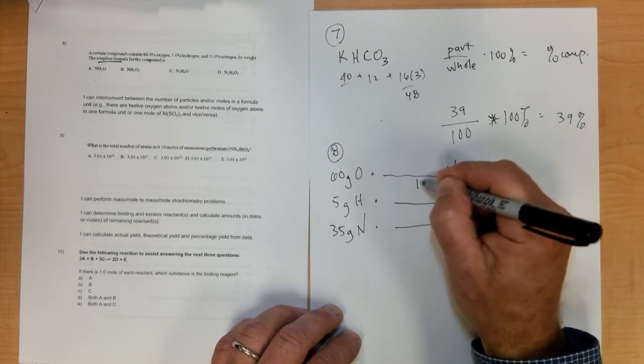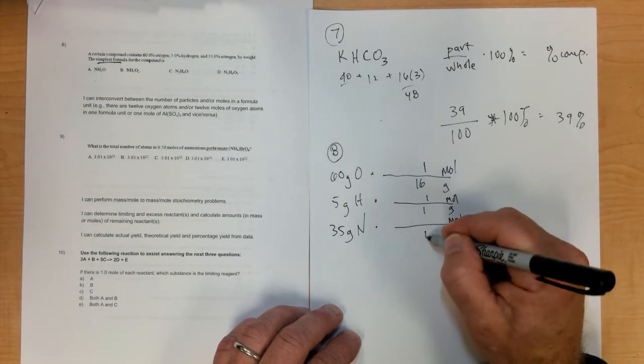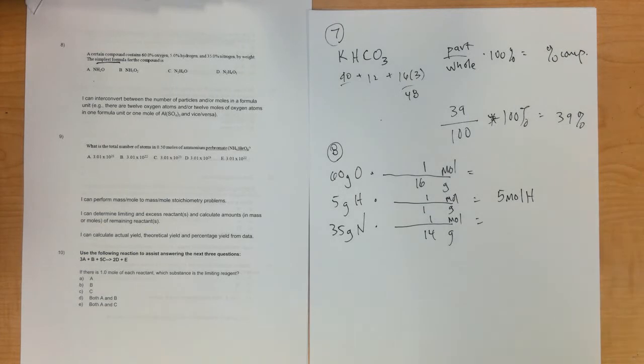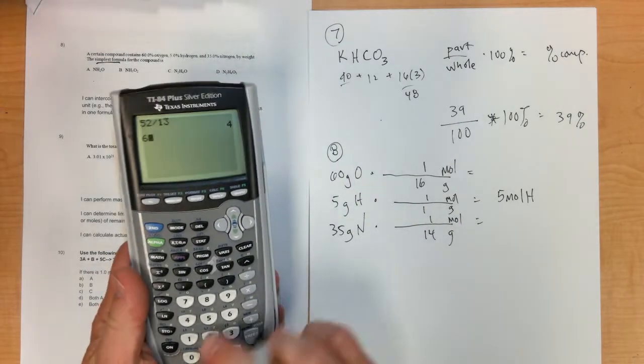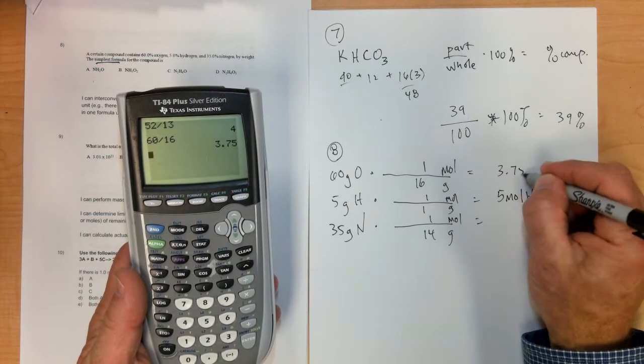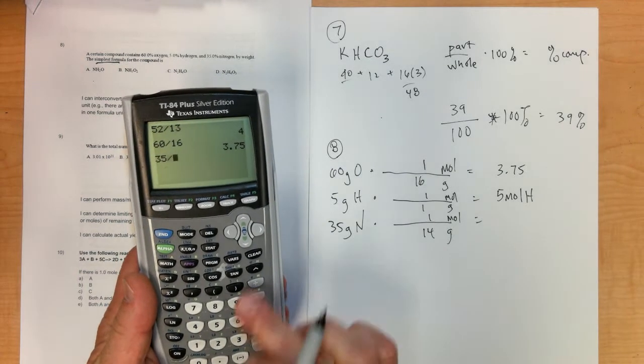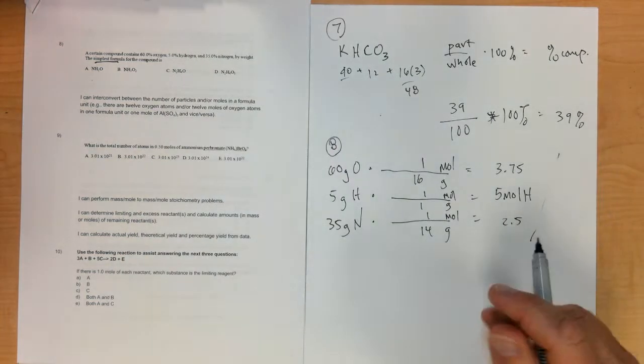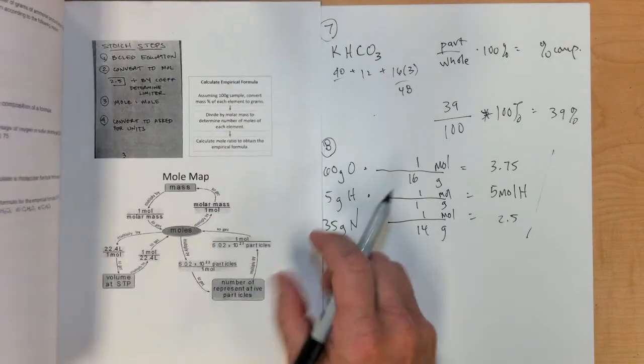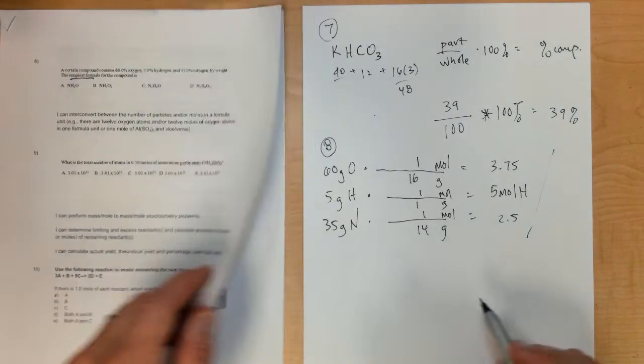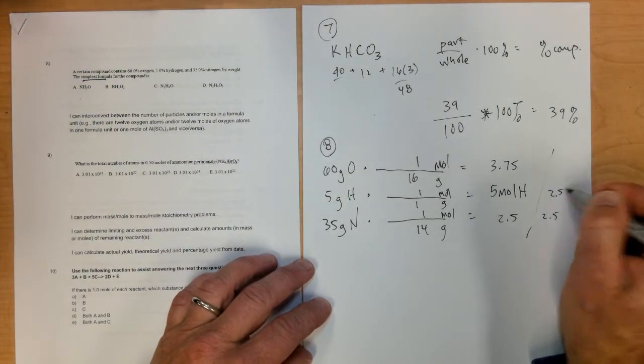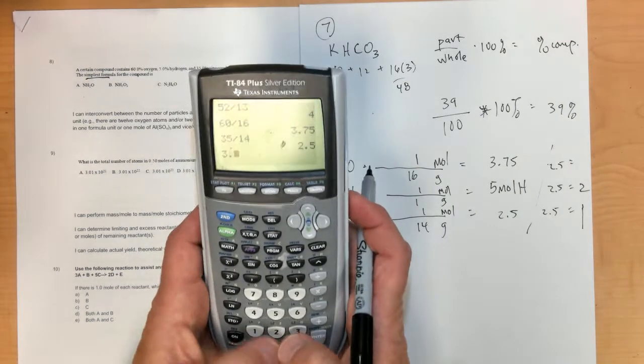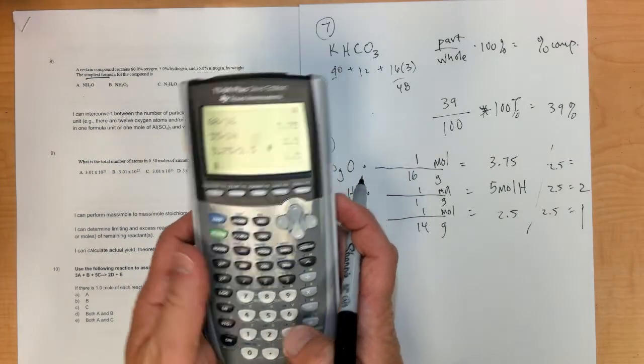Oxygen is 16, hydrogen is 1, nitrogen is 14, giving 5 moles of hydrogen. 60 divided by 16 is 3.75, 35 divided by 14 is 2.5. Find the smallest and divide by the smallest. Calculate the mole ratio by dividing by 2.5: this ends up being 1, this is 2, and 3.75 divided by 2.5 is 1.5.